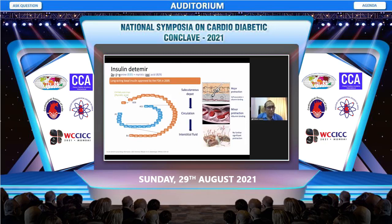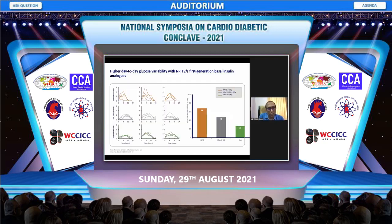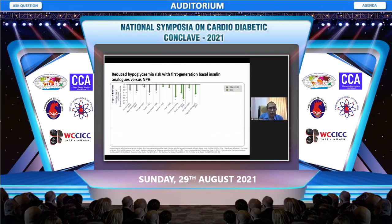The other first generation analog is insulin detemir, produced by adding a fatty acid side chain which increases the duration of action by allowing the insulin to bind to albumin, thereby prolonging its action. The first generation analogs brought a big change compared to NPH — decreased variability and a reduction in the risk of hypoglycemia, particularly nocturnal hypoglycemia, which came down very significantly.